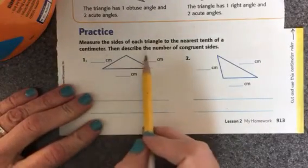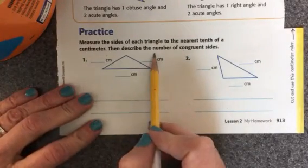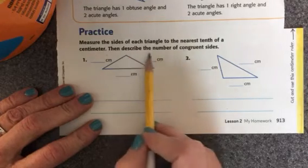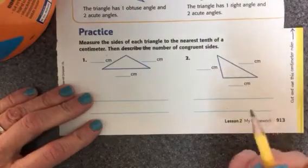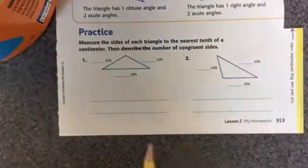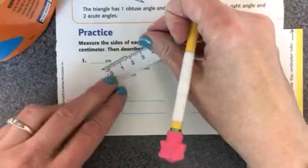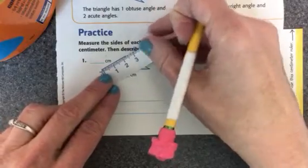So this part, measure the sides of each triangle to the nearest tenth. Yes, we are doing that. And describe the number of congruent sides. You don't need to describe them, just tell how many congruent sides there are. So you'll need your ruler, your centimeter ruler, and you'll measure.